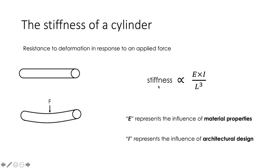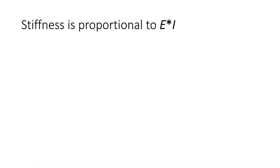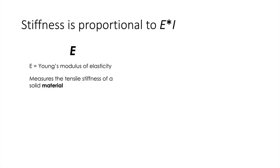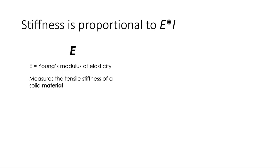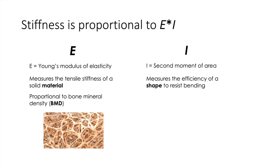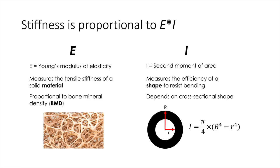Stiffness increases together with the product of E and I. E is the Young's modulus of elasticity, which measures the tensile stiffness of a solid material, and is proportional to bone mineral density, which we can actually measure. I, on the other hand, is the second moment of area, which measures the efficiency of a shape to resist bending. It depends on the cross-sectional shape of a particular object, and for a hollow cylinder it can be calculated using a specific formula.